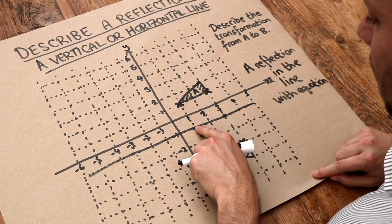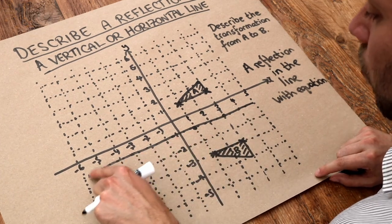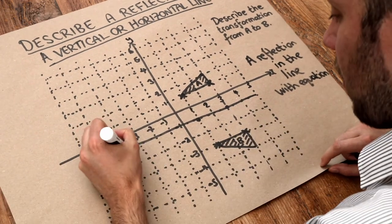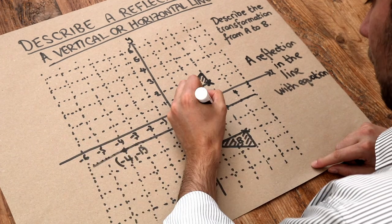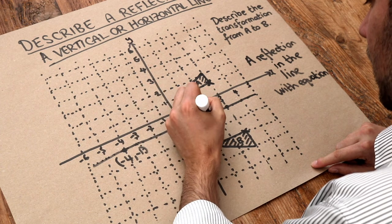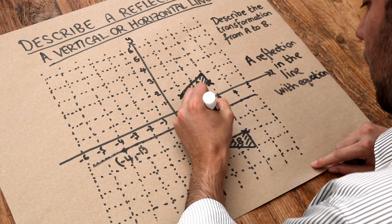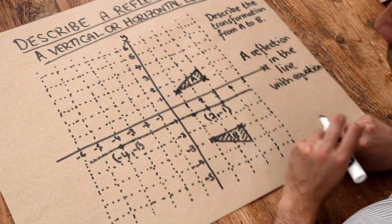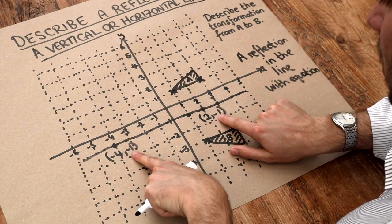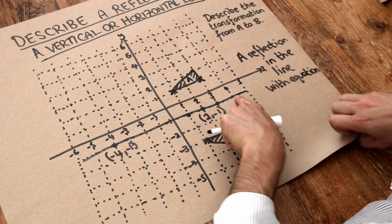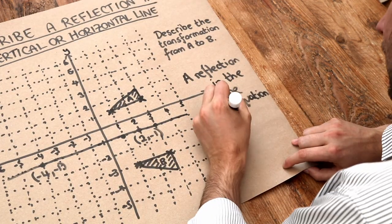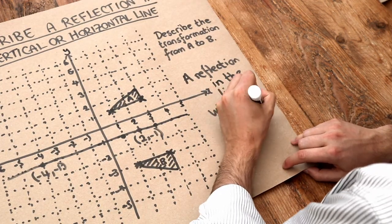Now, if we look at any point on this line, what do you always notice about the coordinates? If I pick this point, for example, that is minus four, minus one. If I pick this point, that is two, minus one. What is always the same? Can you see that the y value is always minus one? Therefore, the equation of this line is y equals minus one.